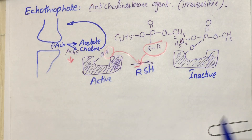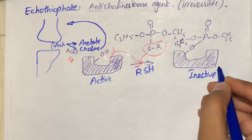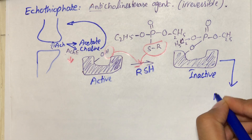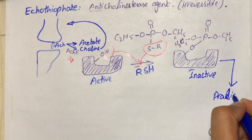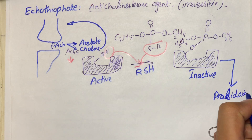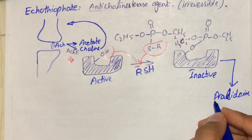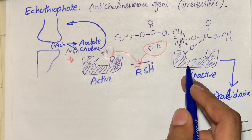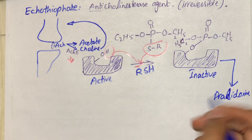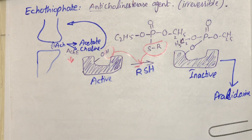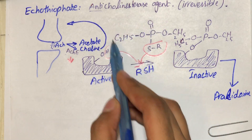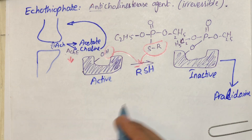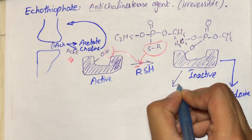At this stage, there can be reactivation of the inhibited acetylcholinesterase by the intake of a drug called pralidoxime. When this drug is taken, the inhibited acetylcholinesterase is actually reactivated. This causes separation of the drug and the enzyme, restoring the active enzyme.